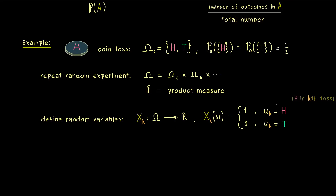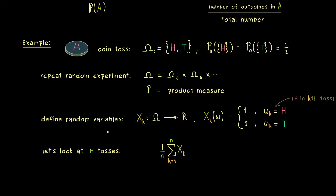However, for the relative frequencies, we will not do infinitely many tosses but will stop at a finite number n. If we want to know how many heads we got, we form the sum from k=1 to n, and when we divide that by n, we get the empirical probability of getting heads. So this is exactly the relative frequency of getting heads, formulated with random variables.